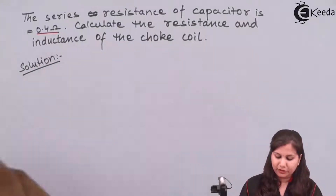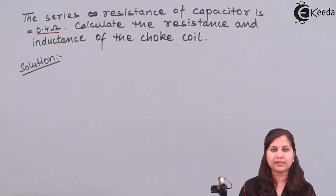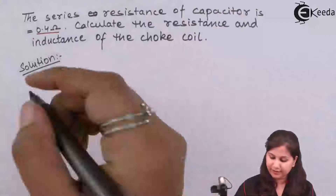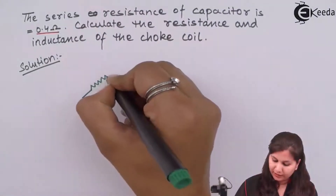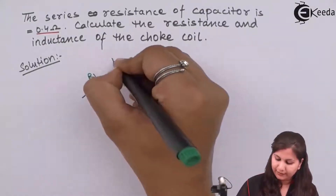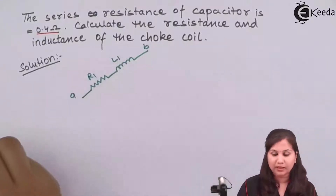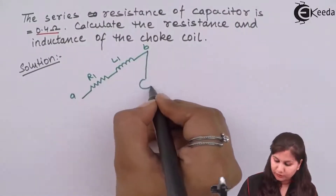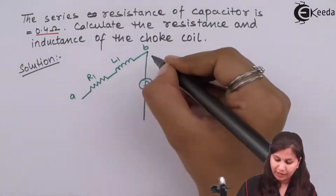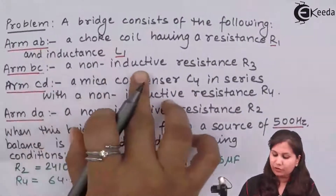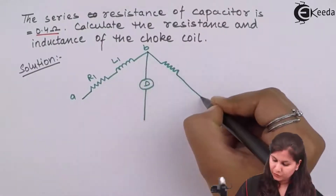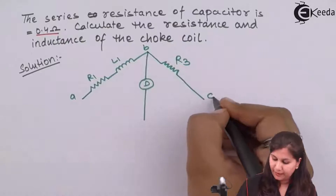As a bridge it consists of four arms AB, BC, CD, and DA. Arm AB has inductor L1 and resistor R1. We also have a detector between BD to obtain the balance condition. Arm BC is a non-inductive resistance R3, so only R3 is drawn here.